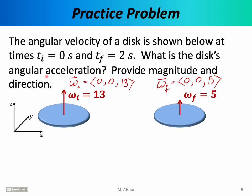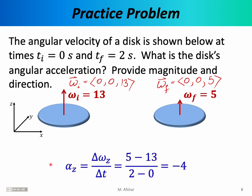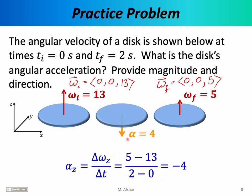What we're really interested in is the angular acceleration vector, which is the change in the angular velocity vector. Everything is happening in the z direction, so we calculate the z component of alpha: it equals the change in omega_z divided by delta t. Final minus initial gives 5 minus 13, and delta t is 2 seconds, giving alpha_z equals minus 4 radians per second squared. The angular acceleration vector points in the negative z direction with magnitude 4 radians per second squared.